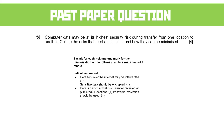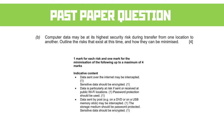Data is particularly at risk at a public Wi-Fi location because all the data is bounced around from computer to computer on a much larger scale than on a wired network. Therefore, you should use password protection. Data sent by post — like on a USB memory stick put in the mail — might also be intercepted. The storage medium should be password protected and sensitive data should be encrypted.